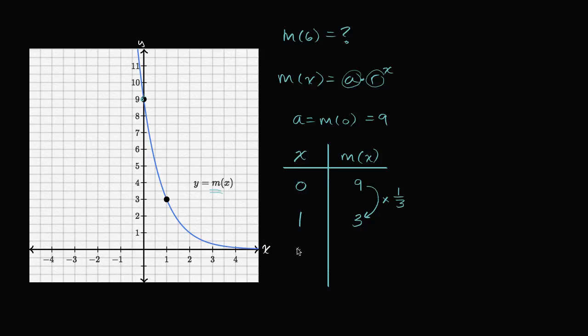In fact, if we wanted to see what m of two is going to be, we would multiply by one-third again. And m of two should be equal to one. And we see that right over here, m of two is indeed equal to one. So our common ratio right over here is equal to one-third.